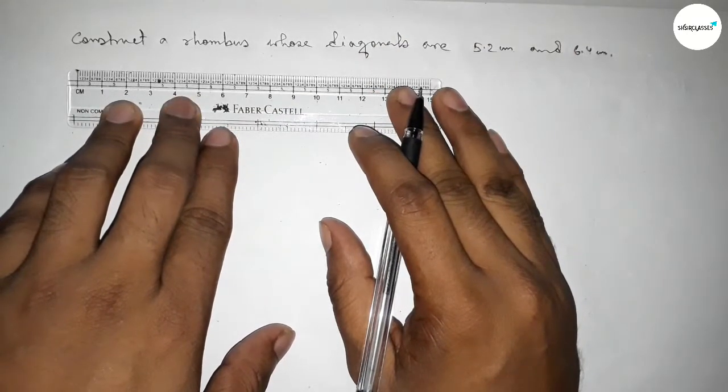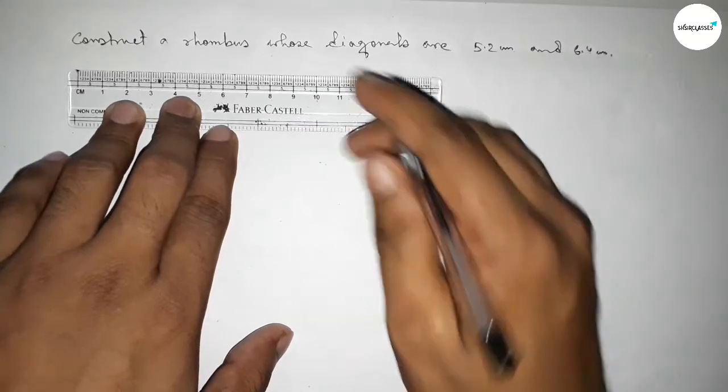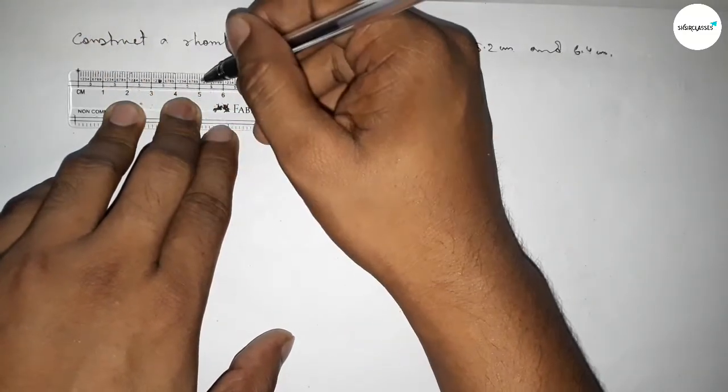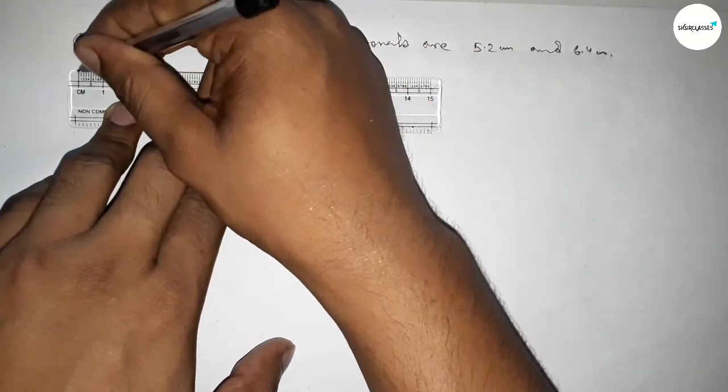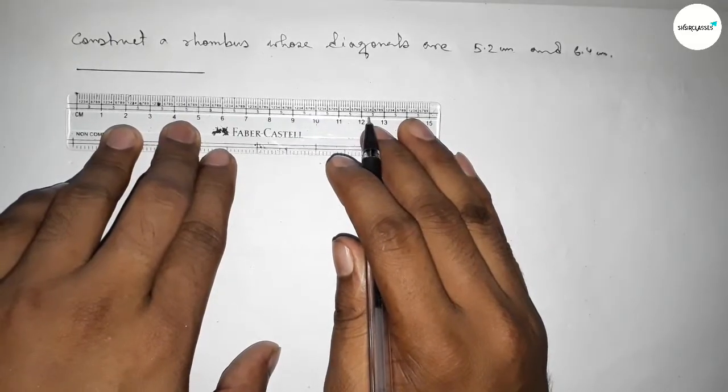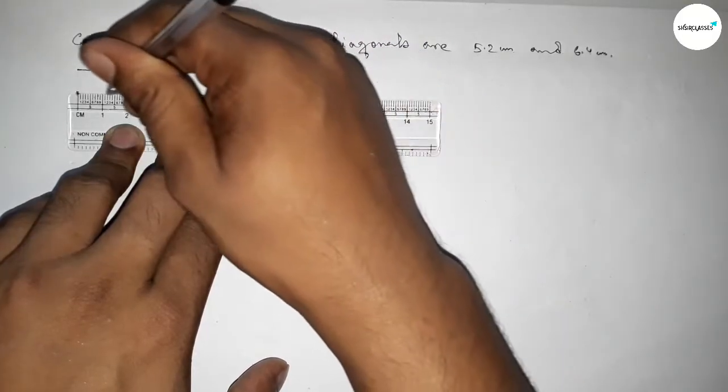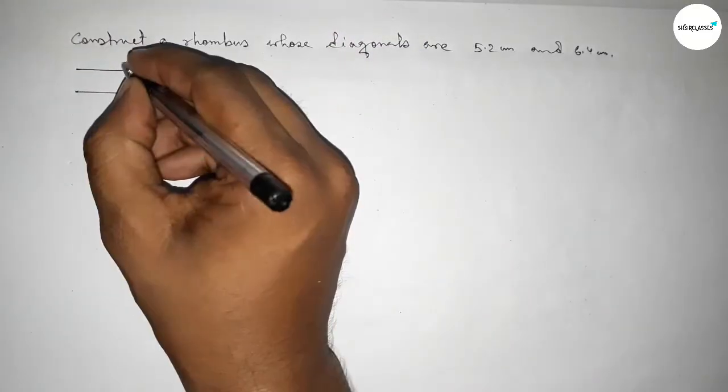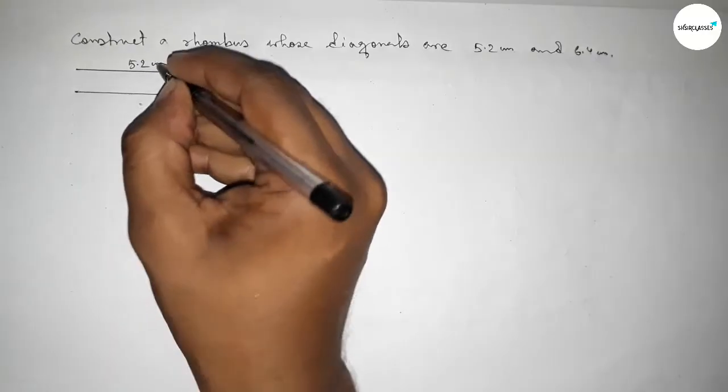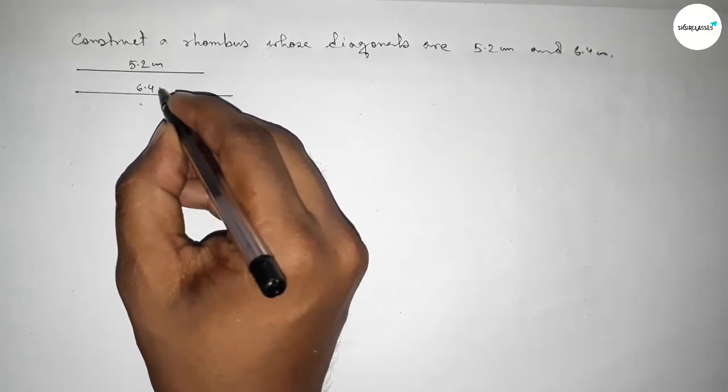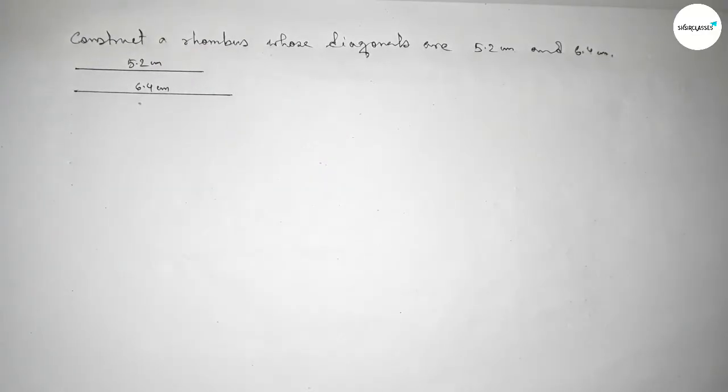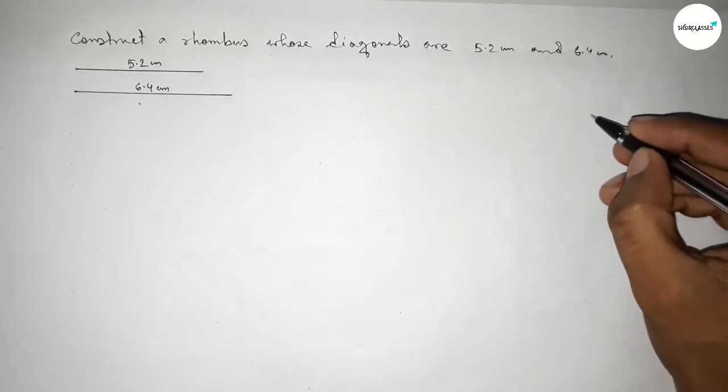First of all, we have to draw the two diagonals. First drawing a line of length 5.2 centimeters, then drawing another line of length 6.4 centimeters. So this is 6.4 centimeters and this line is 5.2 centimeters.